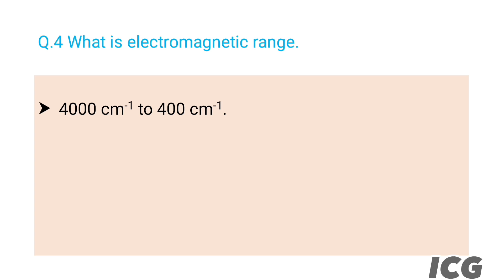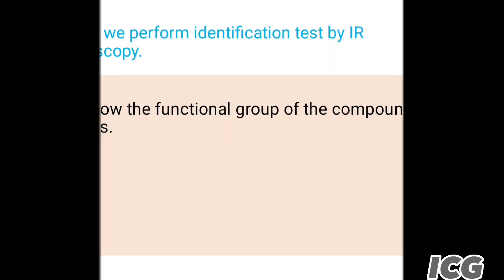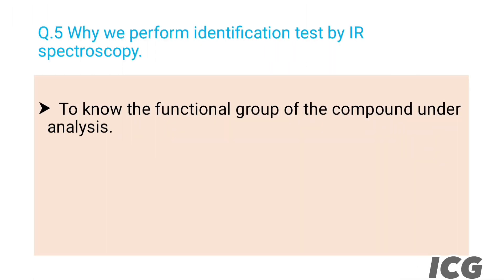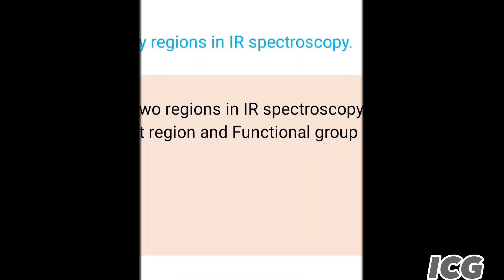The next question is: what is the electromagnetic range in FTIR? The answer is its range is 4000 cm⁻¹ to 400 cm⁻¹. The next question is: why do we perform identification tests by FTIR spectroscopy? The answer is to identify the functional group of the compound under analysis.